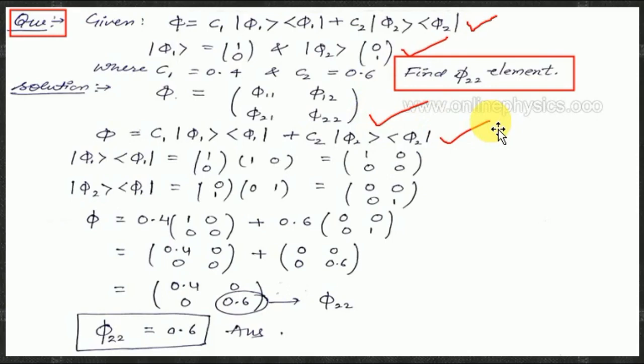The ket-bra product of phi1: ket of phi1 is (1, 0), and bra of phi1 is its row form (1, 0). Their outer product gives the matrix [[1, 0], [0, 0]]. Similarly, for phi2: ket of phi2 is (0, 1) and bra is (0, 1), giving the matrix [[0, 0], [0, 1]].